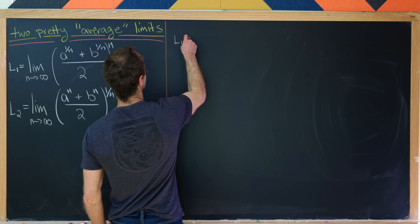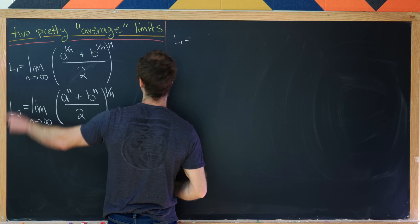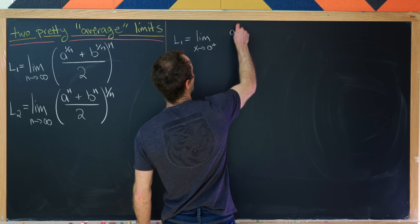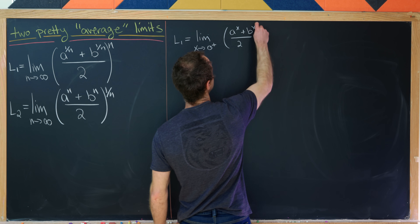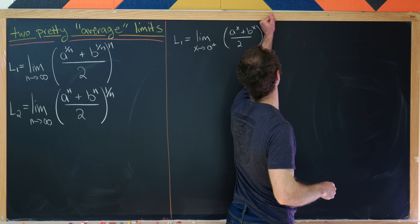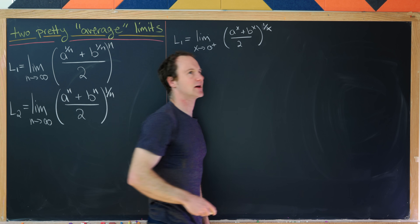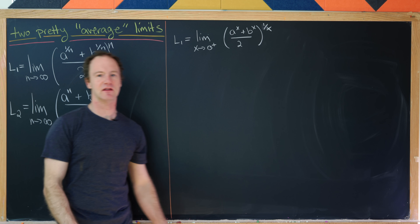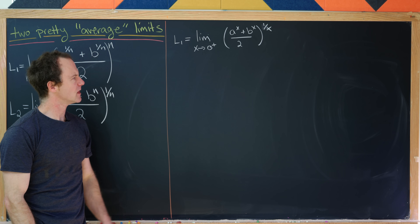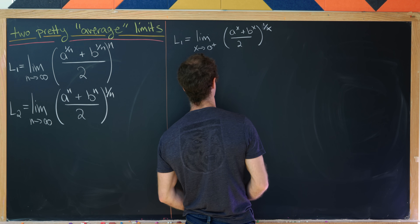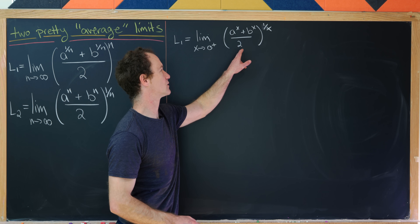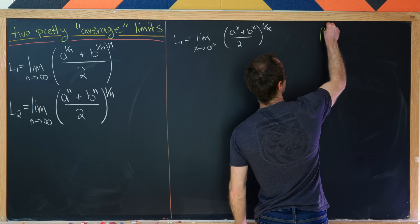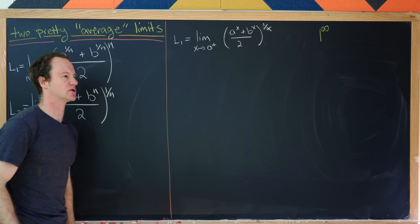The first limit we'll calculate is the limit as n goes to infinity of the nth root of a plus the nth root of b over 2, all raised to the nth power. We can rewrite this using a change of variable where we set x equal to 1 over n, giving us the limit as x goes to 0 from above of (a^x + b^x)/2 all to the power of 1 over x. This is an indeterminate form of type 1 to the infinity, one of these exponential indeterminate forms.